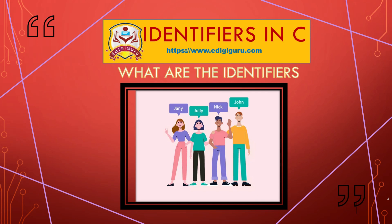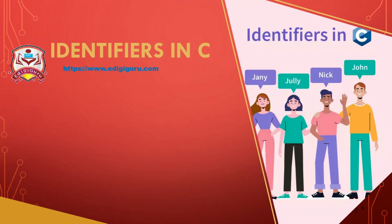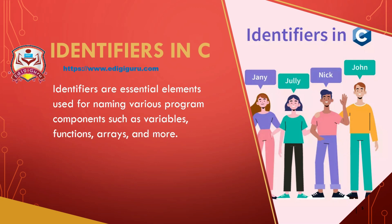Similarly, identifiers in C language are nothing but user-defined names used to identify various programming elements. These elements could include variables, functions, arrays, and so on. So identifiers are the names given to programming elements such as variables, functions, and arrays.